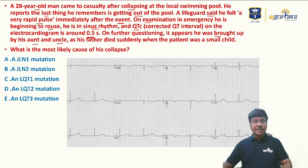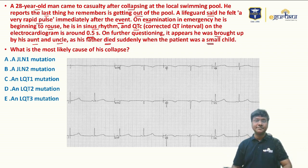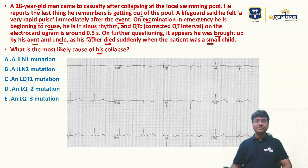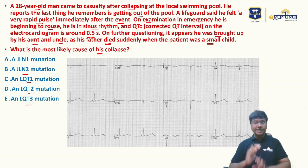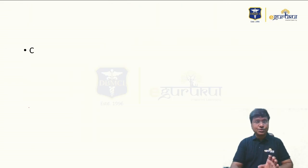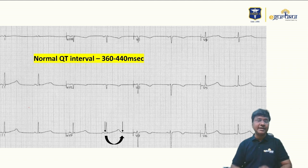On further questioning, it appears he was brought up by his aunt and uncle — his father died suddenly when the patient was a small child. The question is: what is the most likely cause of his collapse? The options are JLN1 mutation, JLN2 mutation, LQT1 mutation, LQT2 mutation, and LQT3 mutation.